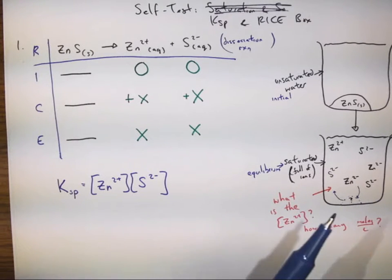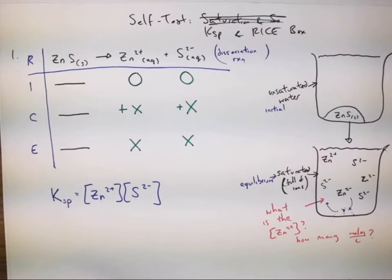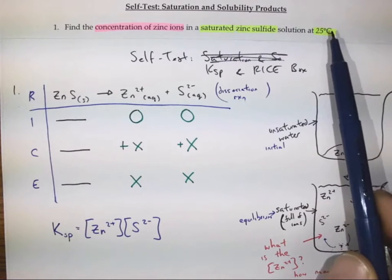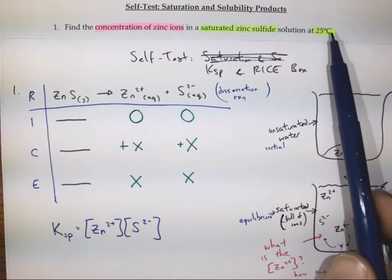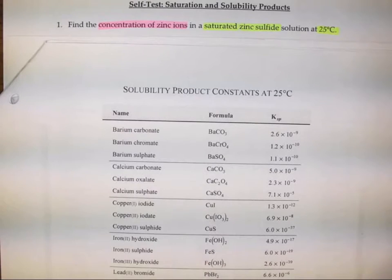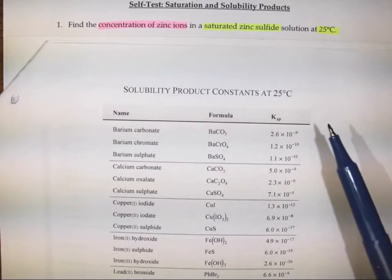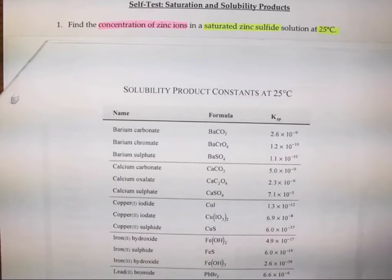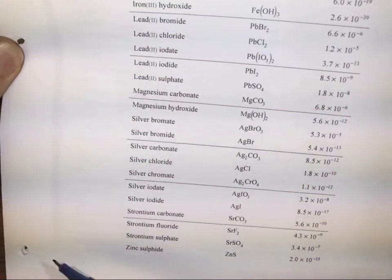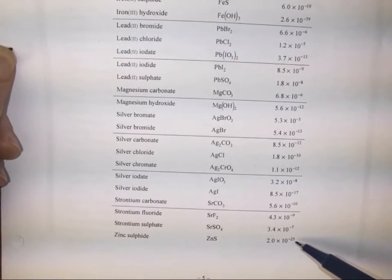It would seem like we're kind of done here if we didn't know any other information. Let's look back at the question — it says it's at 25 degrees Celsius, which is a bit of a hint. If I look in my data package, I can see some solubility products or KSPs at 25 degrees Celsius. These have been standardized at 25 degrees Celsius, so maybe somewhere I'd find zinc sulfide. And there we go — we actually know the KSP for zinc sulfide, and it's 2 times 10 to the negative 25.